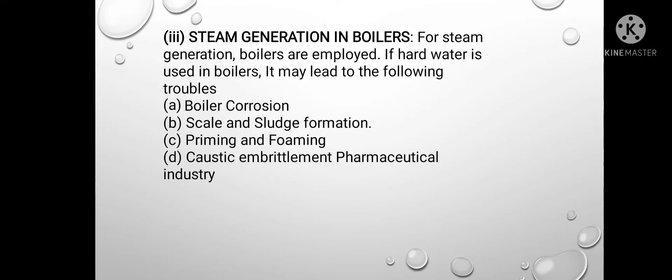The third and last disadvantage of hard water is steam generation in boilers. For steam generation, boilers are employed. If hard water is used in boilers, it may lead to the following troubles: boiler corrosion, scale and sludge formation, priming and foaming, and caustic embrittlement.